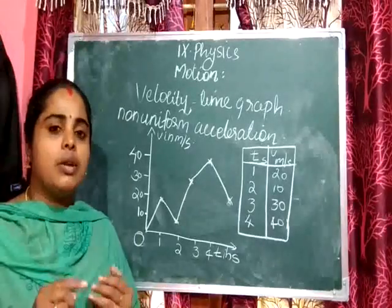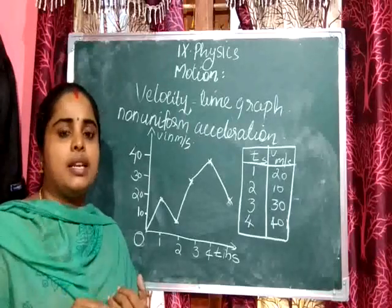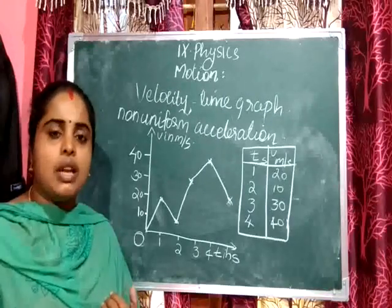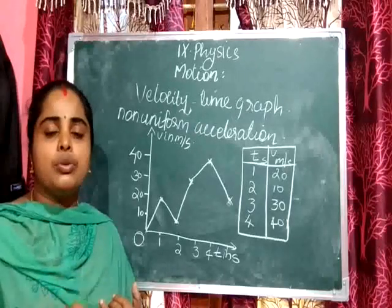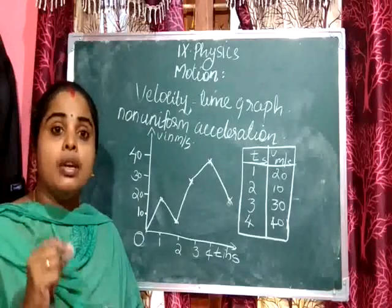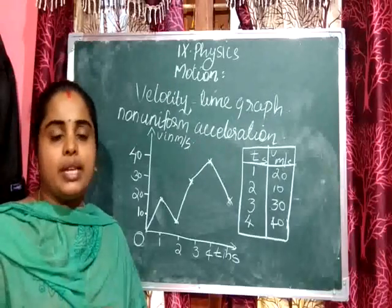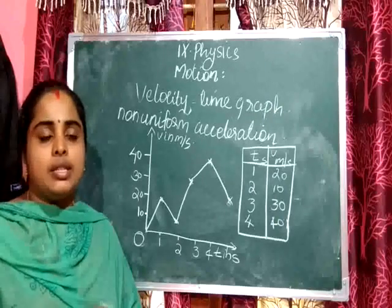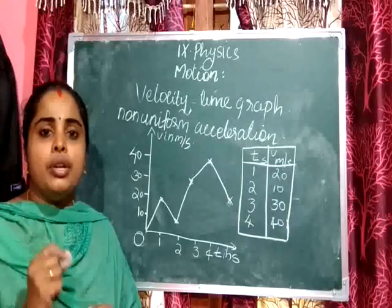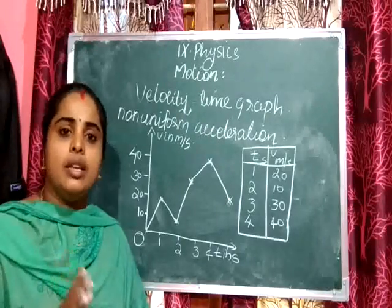Today we discussed the velocity-time graph for uniform acceleration — the graph is a straight line with slope, and from it we can find acceleration and distance travelled. The velocity-time graph for constant velocity is a straight line parallel to the x-axis. For non-uniform accelerated motion, the velocity-time graph can have any shape.